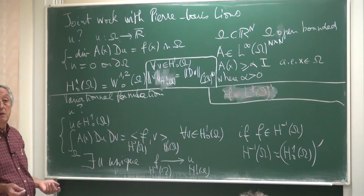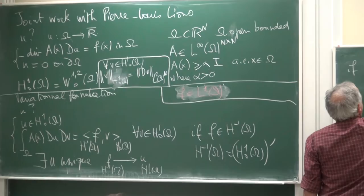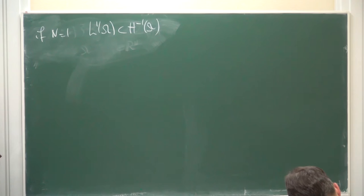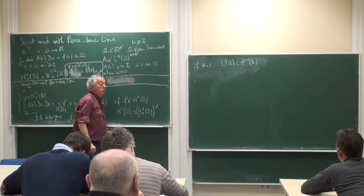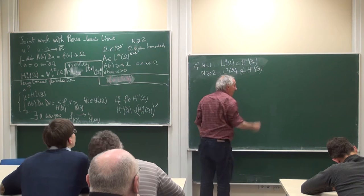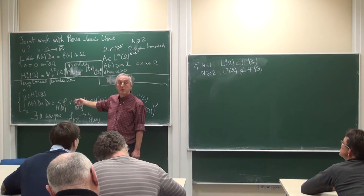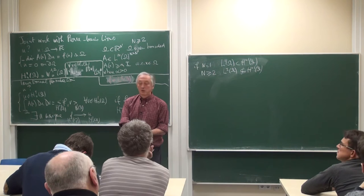I would like to take f in L¹ — this will be the novelty in the problem. There is an easy case: the case where the dimension is 1, because when the dimension is 1, L¹(Ω) is a subspace of H⁻¹(Ω). So for n equal to 1 I just return to that. For that reason I will assume here that n is more than or equal to 2. If n ≥ 2, then L¹ is no more contained; there exist functions in L¹ which are not elements of H⁻¹, so I can no more solve this problem in this sense. So I have to introduce something new.